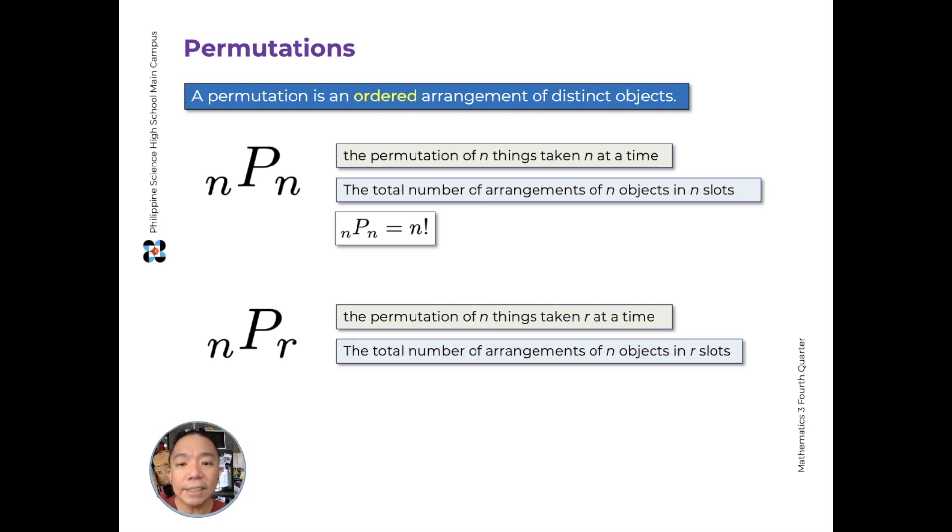So we could interpret this as the total number of arrangements of n objects in r slots, where r is less than n but greater than 0. And we write this as n factorial over n minus r factorial. This button, nPr, you will probably see this in your scientific calculators. So you can use the formula n factorial over n minus r quantity factorial, or you can use it directly in the calculator. But we need to know where the formula comes from, because we'll use it later to expand on other topics.